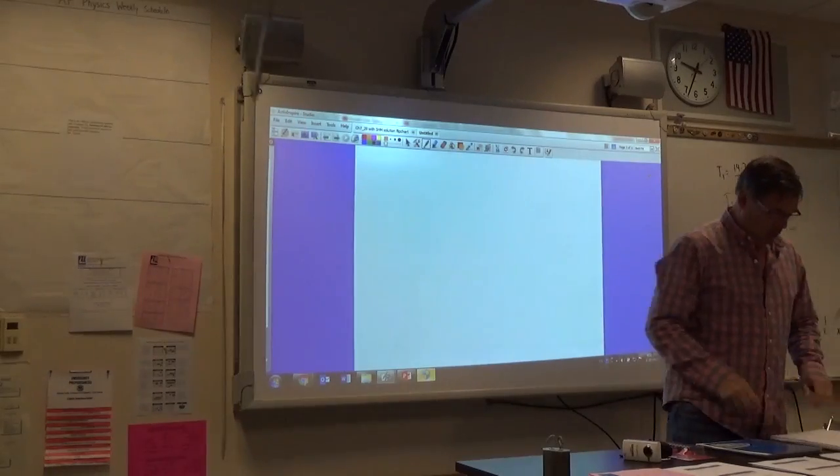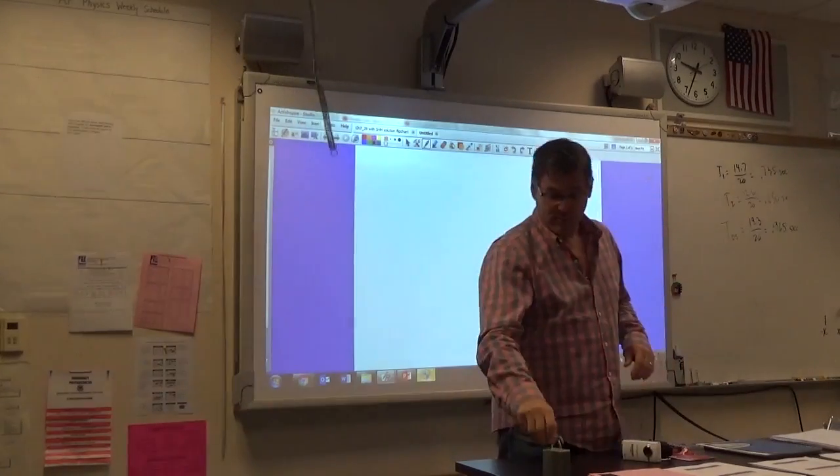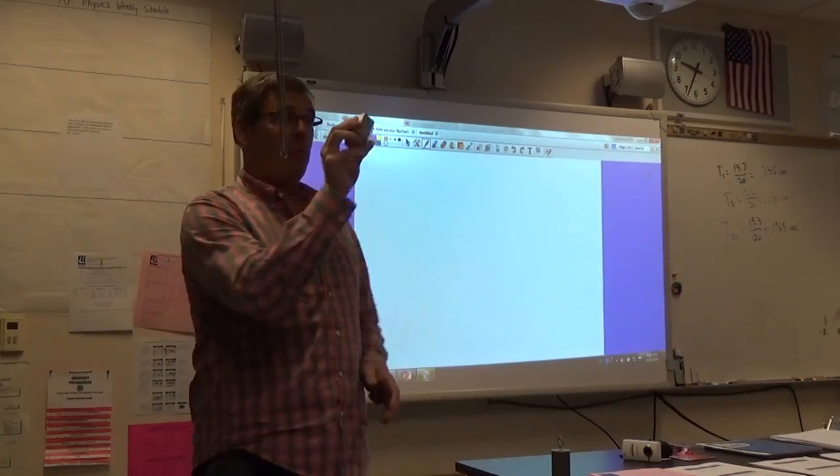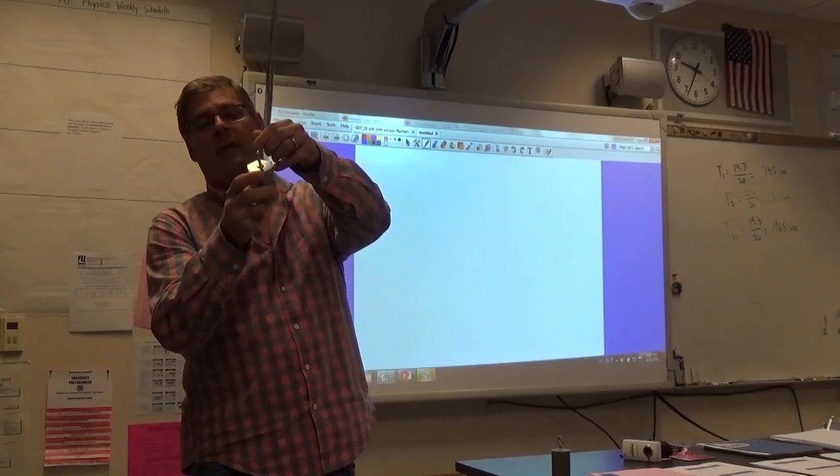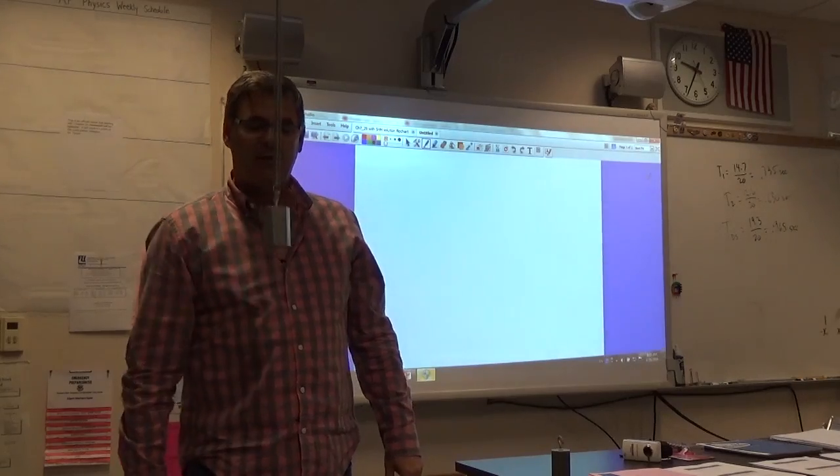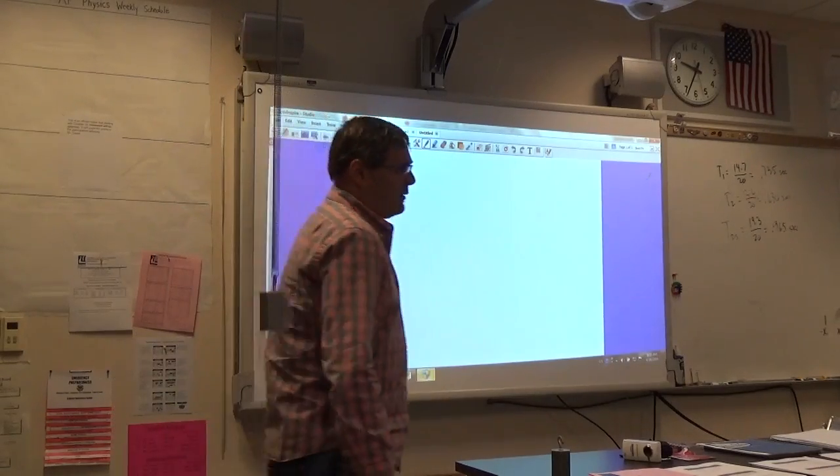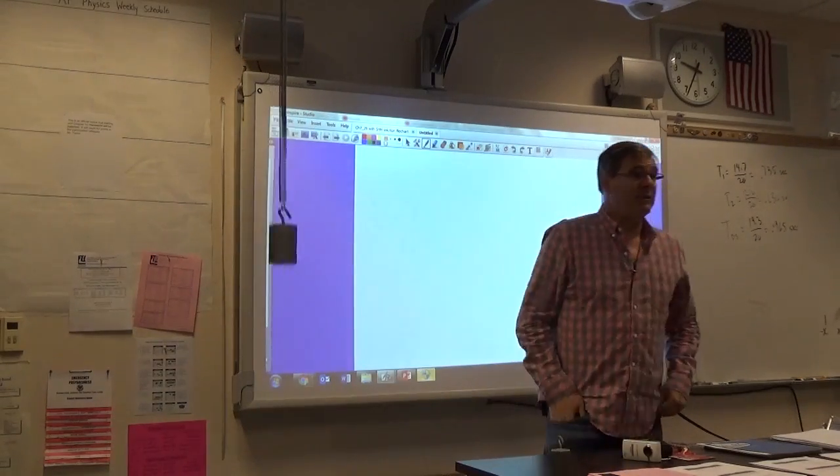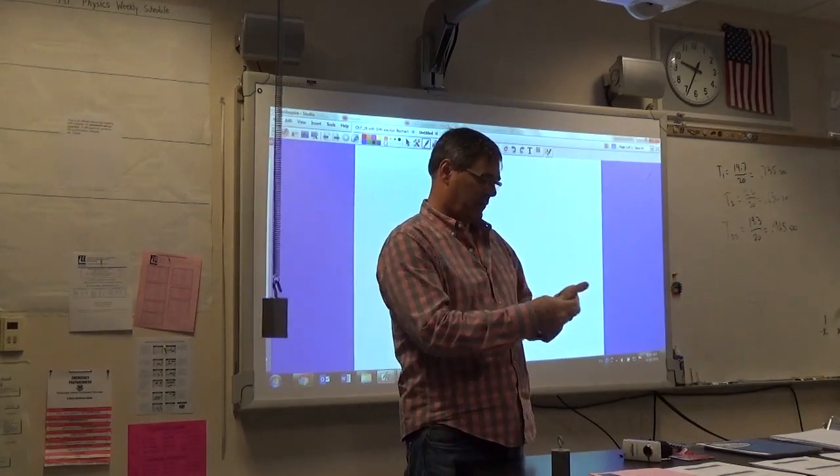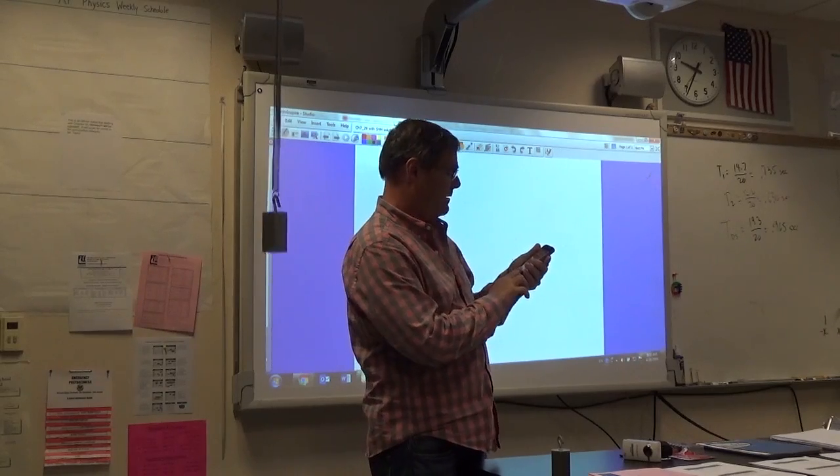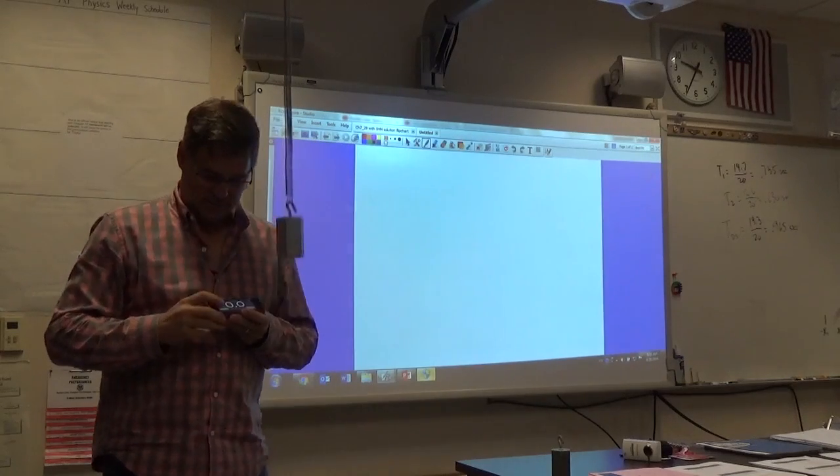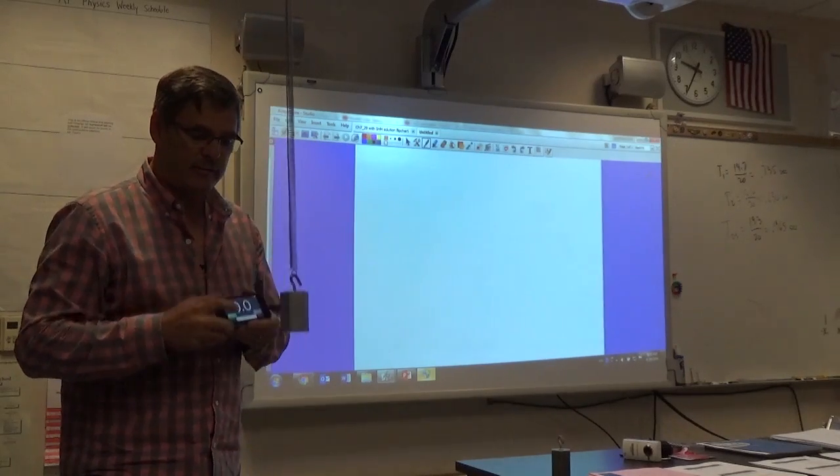And what we're going to do first is we're going to figure out what the k constant is for this spring. So I'm going to take a one kilogram mass and I'm going to hang it and I'm going to set it into oscillation. And let's measure the time it takes. Twenty is a little long. Let's just do it for ten. So I'm going to take out my phone here and pull up the stopwatch app. On your mark, get set, go.